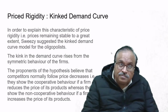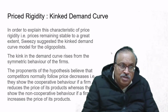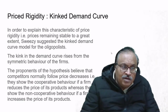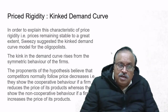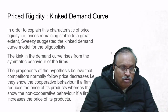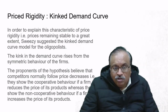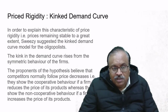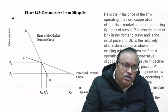The kink in the demand curve arises from the asymmetric behavior of firms. The proponents of the hypothesis believe that competitors normally follow price decreases—they show cooperative behavior if a firm reduces its price—whereas they show non-cooperative behavior if a firm increases its price.